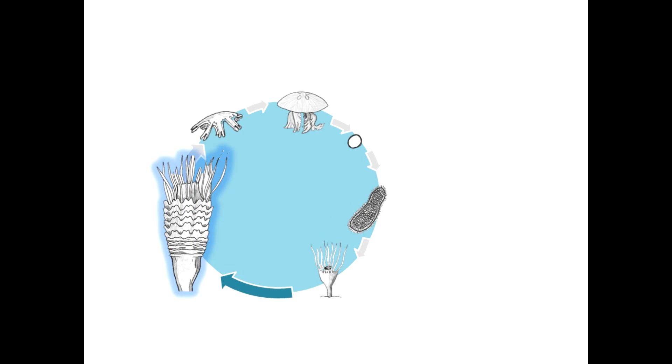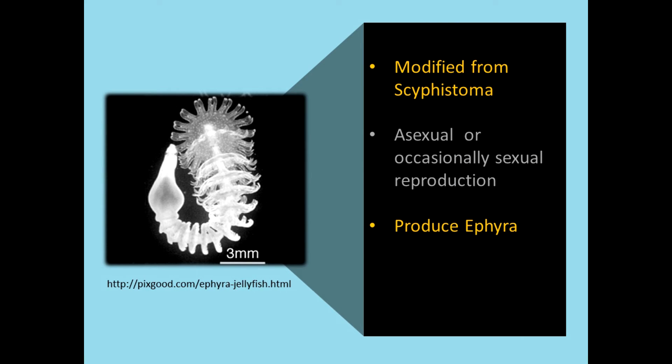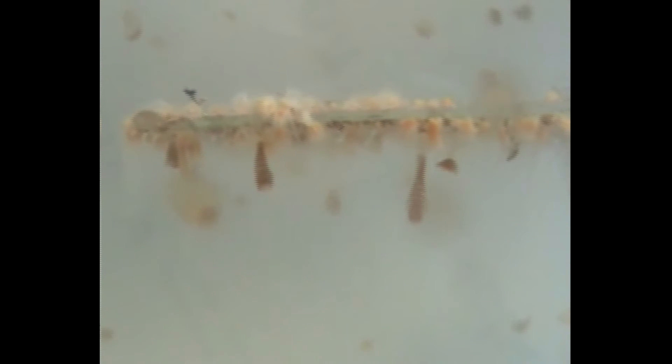The strobila is the modified scyphistoma in that the budding will occur at the apical end. The strobila undergoes one of a variety of types of asexual or occasionally sexual reproduction, resulting in the formation of ephyrae, which are simply small medusae.